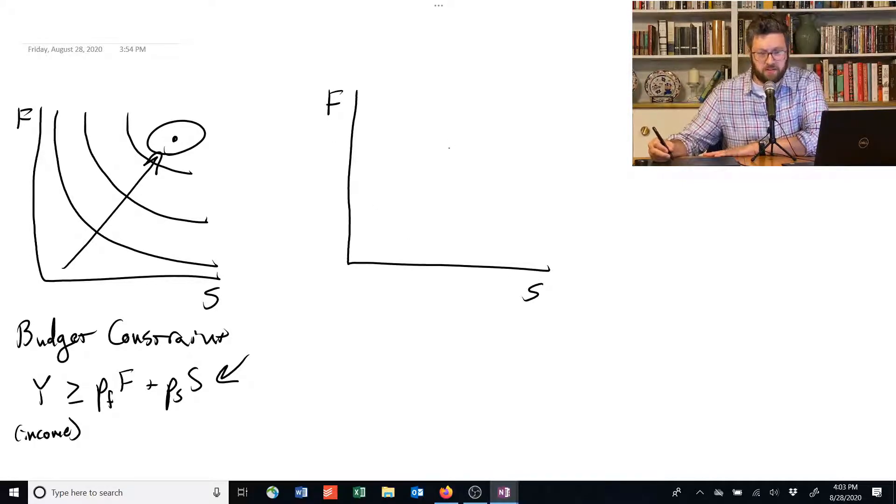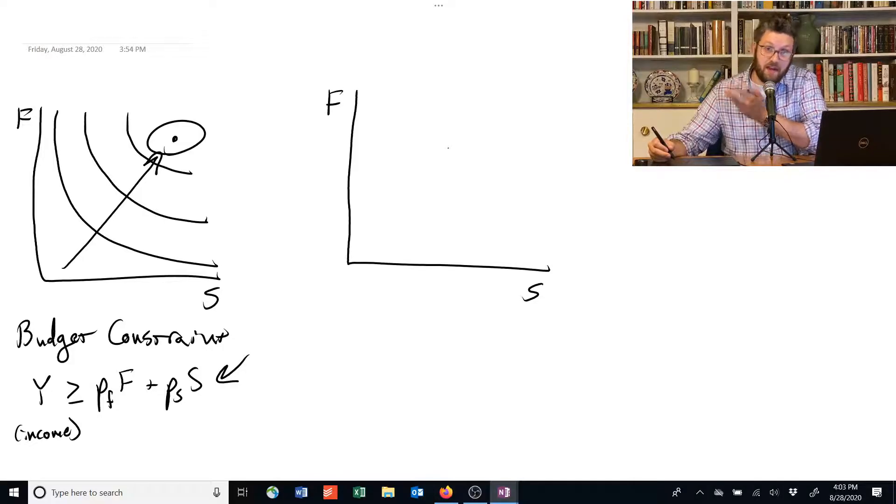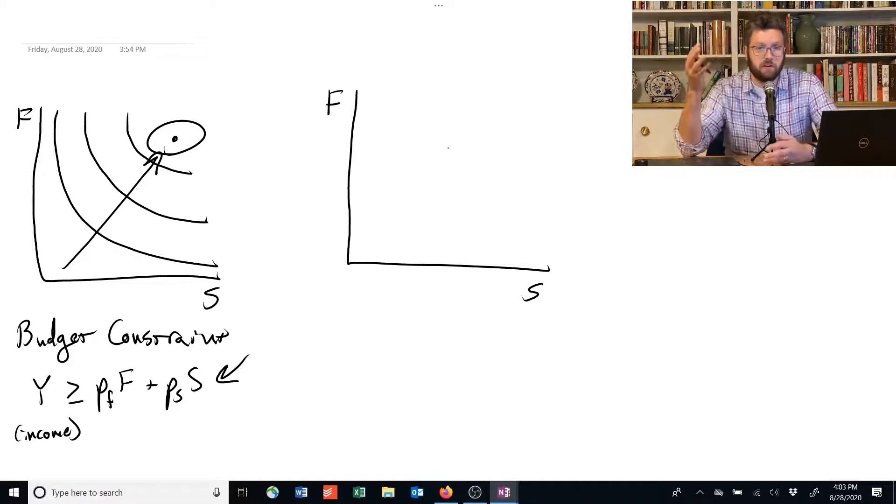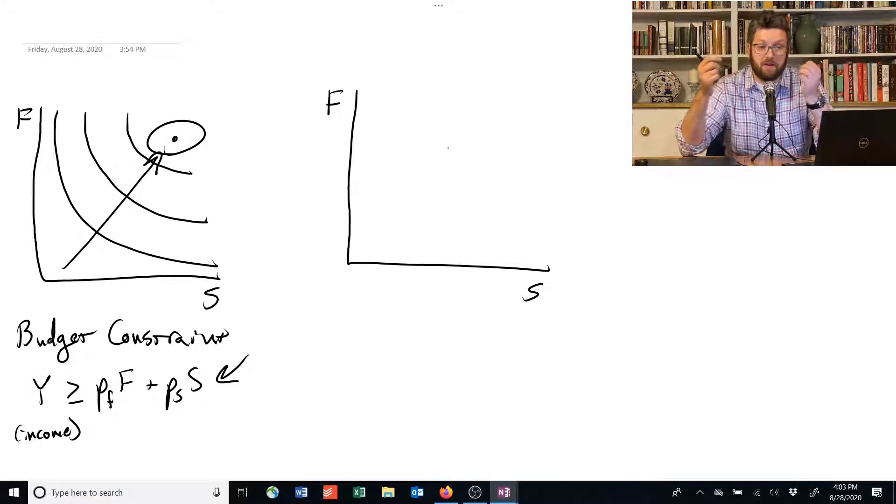But we essentially have F on the vertical axis and S on the horizontal one, so we just need to rearrange this budget constraint to give us that kind of, to solve for F basically.